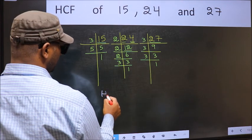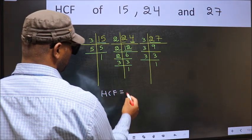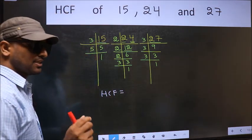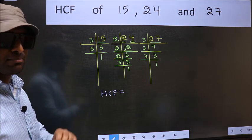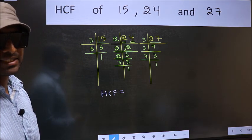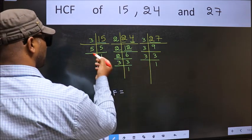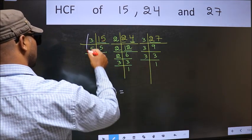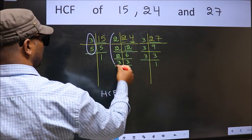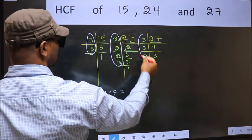Therefore, our HCF is the product of the numbers which should be present in these three places. That is here and here and also here.